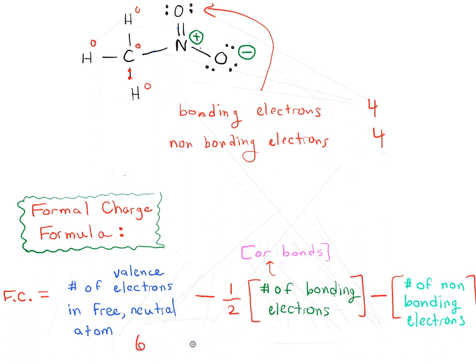So the number of valence electrons in free neutral oxygen is six. Six minus one half times four is gonna be two. Again just count the number of bonds, same answer. Minus four. So six minus two minus four gives you zero. So this oxygen is actually not charged.